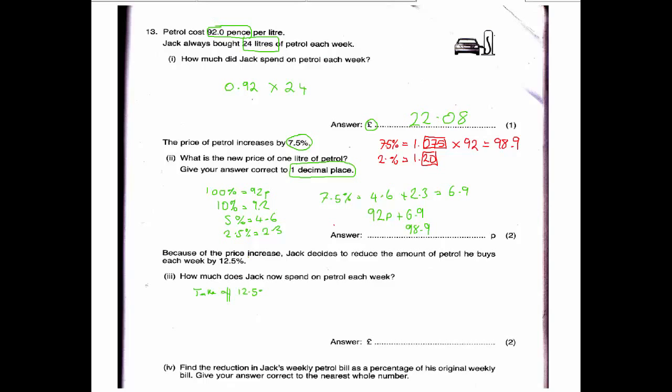We can do exactly the same again by finding a 10%, a 5%, and a 2.5%. So we're going to take off 12.5%. So 100% equals 24 litres, that's the total amount that he would normally buy. So 10% would be 2.4, 5% would be 1.2, 2.5% would be 0.6. So to get us 12.5%, we need a 10 and a 2.5. So 12.5% is the same as 2.4 plus 0.6, which is the same as 3 litres. So we take our original amount, which is 24 litres, and we subtract 3 and that gives us 21 litres.